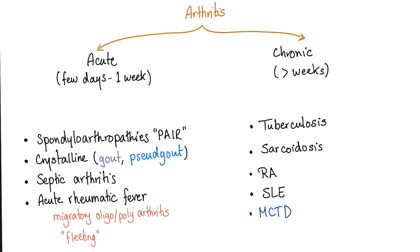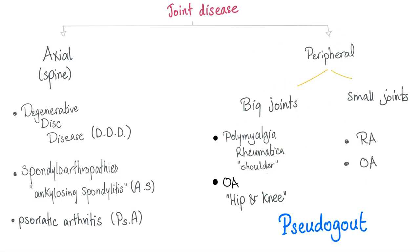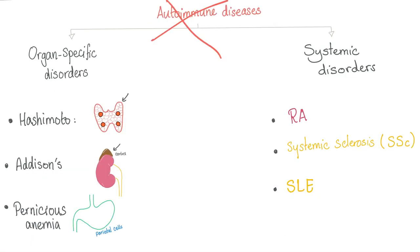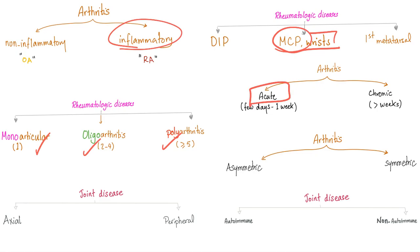Is pseudogout acute or chronic? It's acute. The chondrocalcinosis can be chronic, but not the acute attack itself — not the painful arthritis. Is pseudogout asymmetrical or symmetrical? Usually asymmetrical. Does it affect the axial skeleton or peripheral joints? Peripheral joints such as knee, wrist, shoulder, ankle, etc. Is it an autoimmune disease? No. So, pseudogout is inflammatory, affects the MCP and wrist, but the number one joint is the knee. It could be mono, oligo, or polyarthritis. It's acute, peripheral, and not autoimmune.